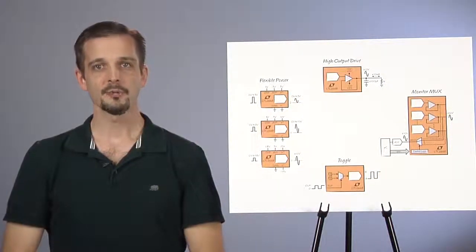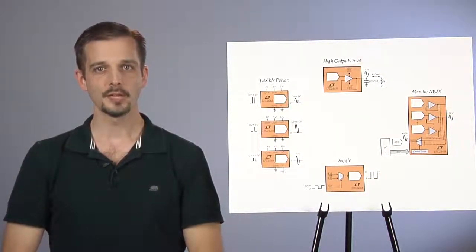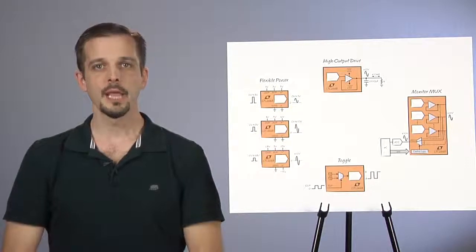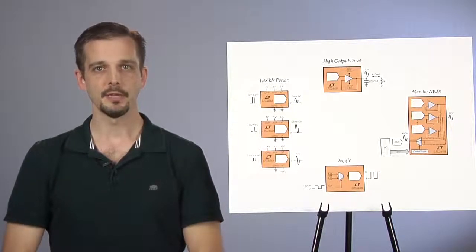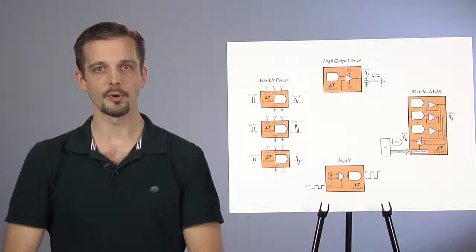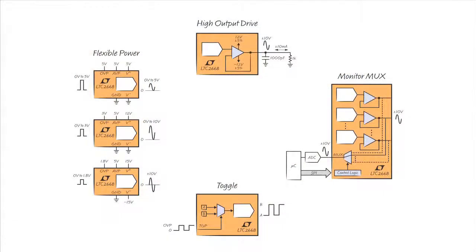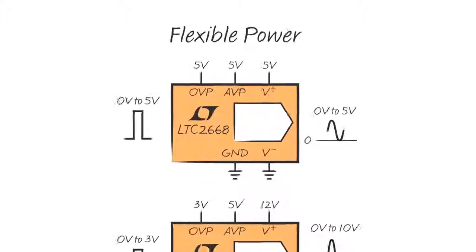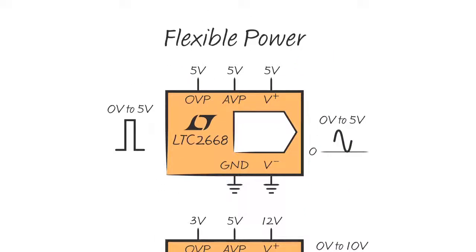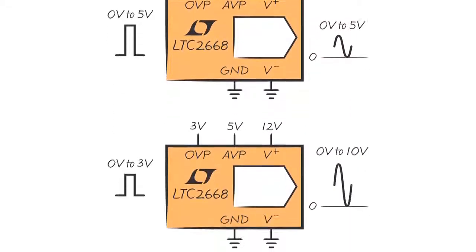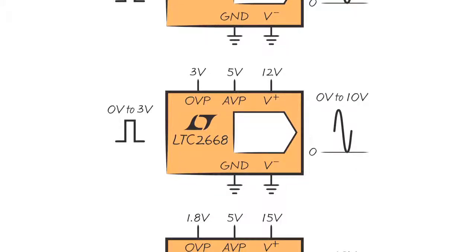The reference pin can also be configured as an input when an external reference is preferred. A 12-bit version is available if 16-bit resolution is not required. The supply voltages are flexible. If all DACs are set to the unipolar 5V range, then only a single 5V supply is required. A single 12V supply will support the unipolar 5V and 10V spans.